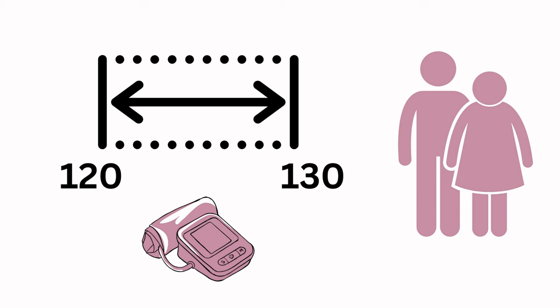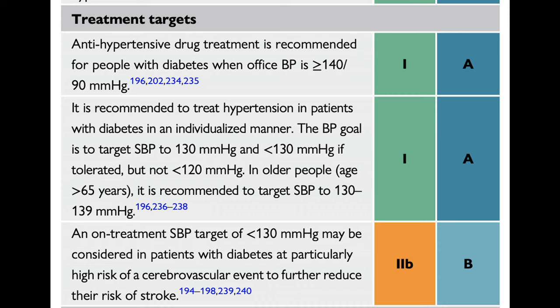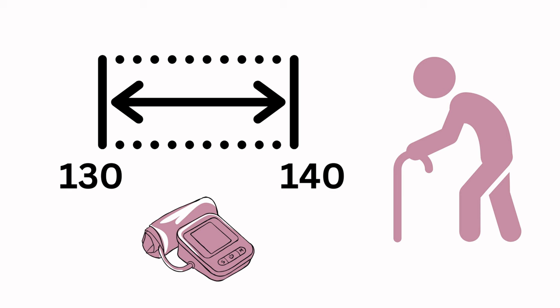The optimal blood pressure target in patients with diabetes is still a matter of debate. In the 2021 ESC guidelines, for diabetic patients below the age of 70, the office systolic blood pressure target is between 120 and 130 mmHg. Low systolic blood pressure levels are acceptable if tolerated and may be beneficial for stroke prevention. In patients above 70 years, systolic values less than 140 down to 130 if tolerated are acceptable, and the diastolic blood pressure target is less than 80 mmHg for all treated patients.